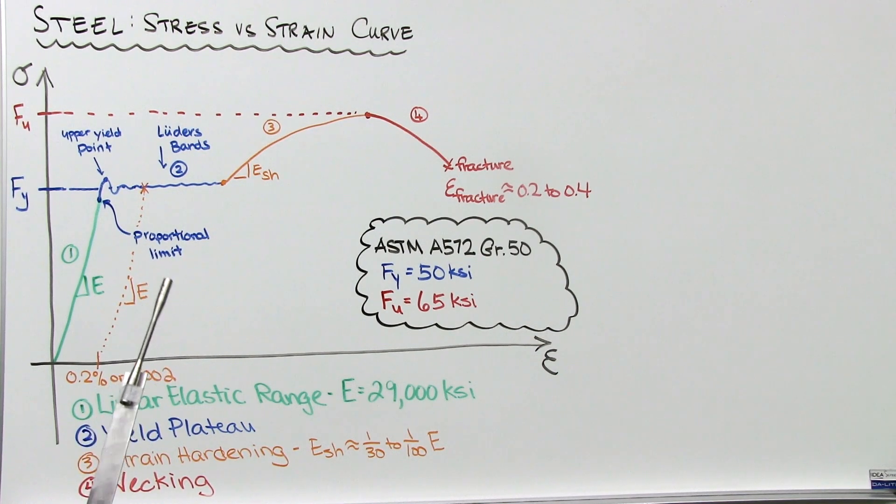Some steels, especially the high-strength varieties, will have little to no yield plateau. Whereas others, like a mild carbon ASTM A36 steel, will have a longer yield plateau.